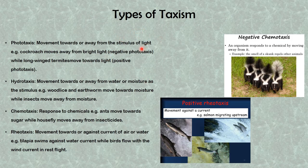Looking at the types of taxism further: in phototaxis, there is movement towards or away from the stimulus of light. Cockroaches move away from bright light — that is negative phototaxis — while winged termites move towards light, which is positive phototaxis. Hydrotaxis describes movement towards or away from water or moisture. Wood lice and earthworms move towards moisture (positive hydrotaxis), while insects move away from moisture (negative hydrotaxis).